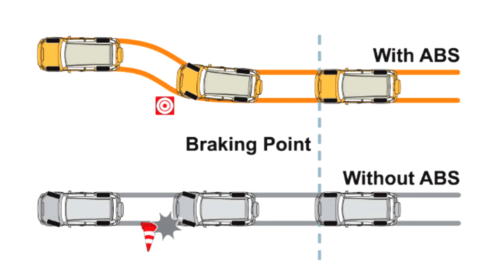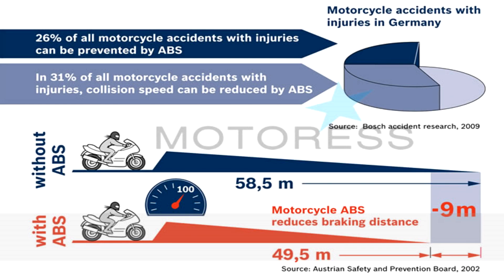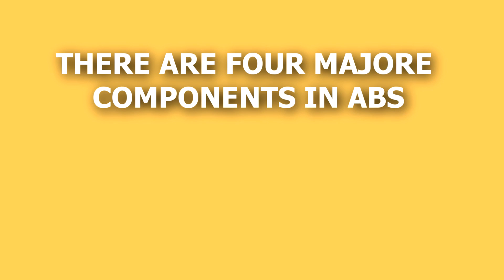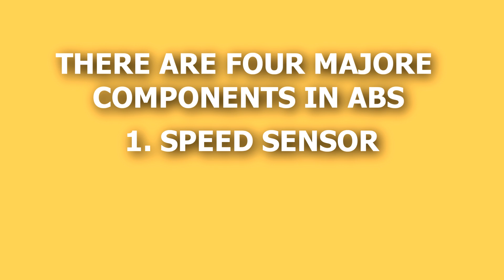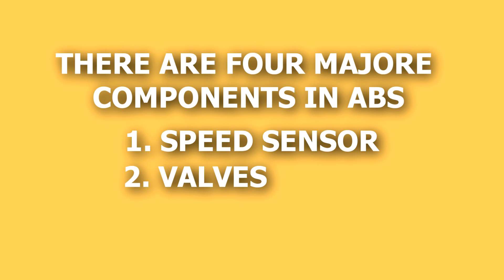ABS generally offers an improvement in bike handling and control, and decreases the stopping distance on both dry and slippery surfaces. There are four major components in ABS. First, the speed sensor — this sensor monitors the speed of each wheel and determines the necessary acceleration and deceleration. Second, the valve — the valve regulates the air pressure to the brakes during ABS action.